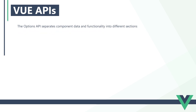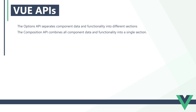The options API separates component data and functionality into different sections, known as options. It's easy to learn and is suitable for small to medium scale applications. The composition API combines all component data and functionality into a single section. It's slightly more difficult to learn and is recommended for large-scale applications. One of the great things about Vue is that we don't have to choose one over the other — we can use both in our application.